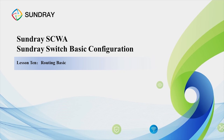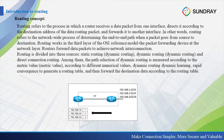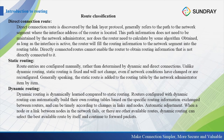For the last part, it's the routing basics. Routing refers to the process in which a router receives data packets from one interface and forwards them to the destination address. The routing can be divided into three kinds: the first is static routing, the second is dynamic routing, and the third is directly connected routing.